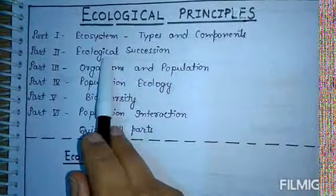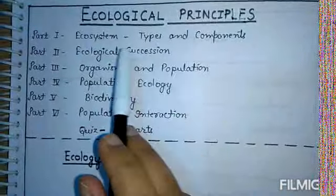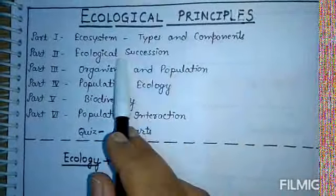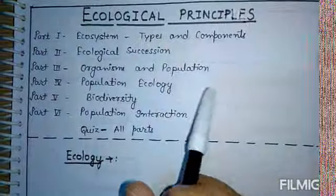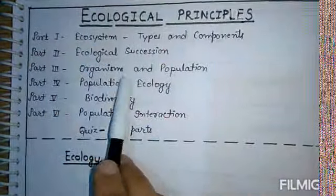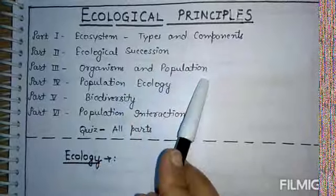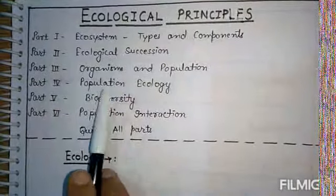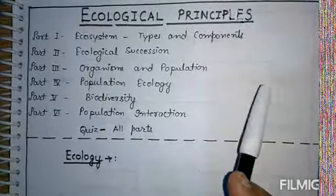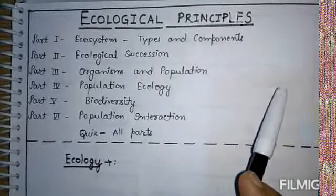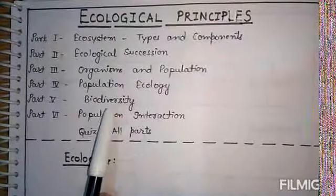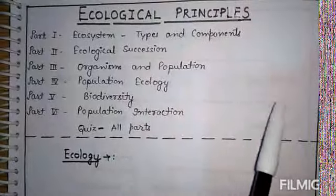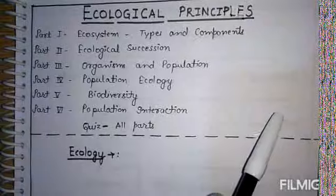The second part would discuss about ecological succession, which is also known as ecological evolution, and it is a very important topic in the context of ecology. The third part would include organisms and populations and their various characteristics. The fourth part would include population ecology and related questions or numericals like the Hardy-Weinberg equilibrium questions. The fifth part would include biodiversity, the loss of biodiversity, and the various means of conservation of biodiversity.